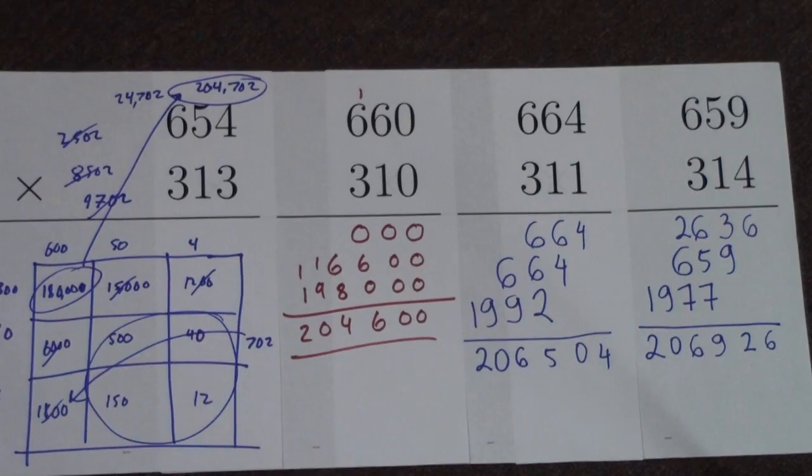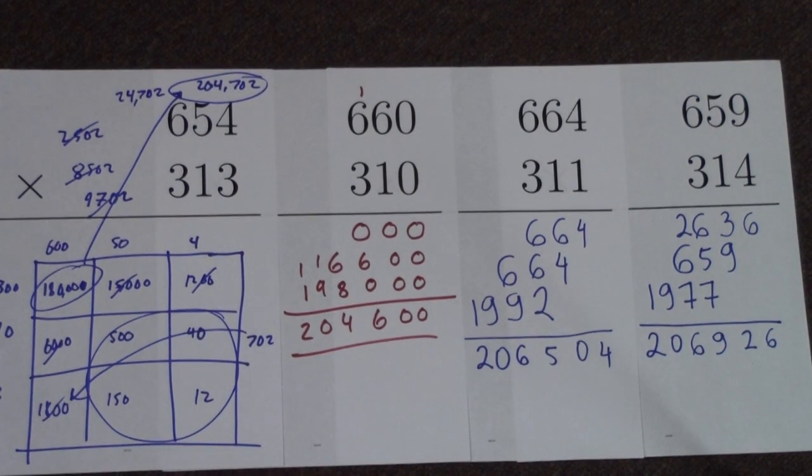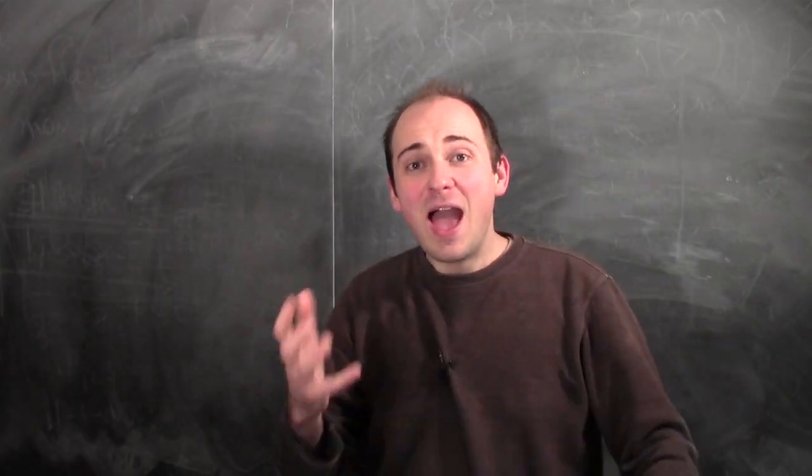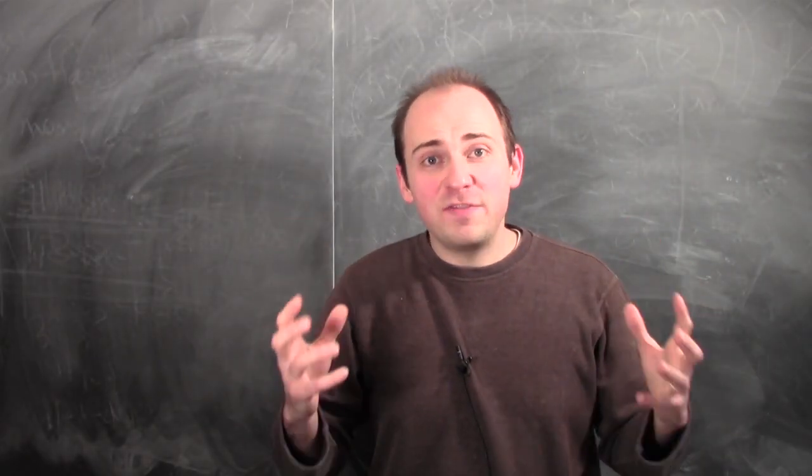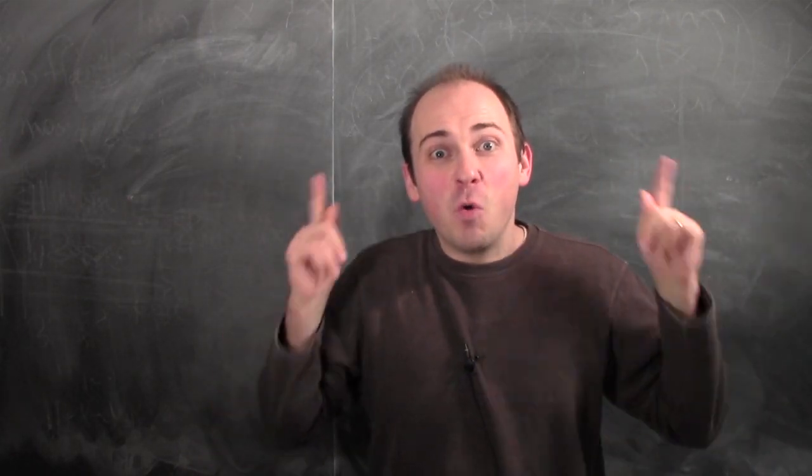204,600, 206,504, 206,926, 204,702. We multiplied all of these pairs of nearby numbers, and the results of the multiplications were also nearby.